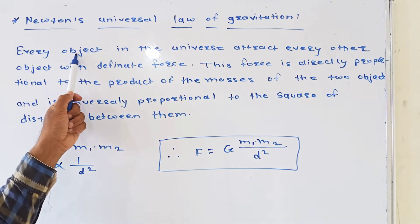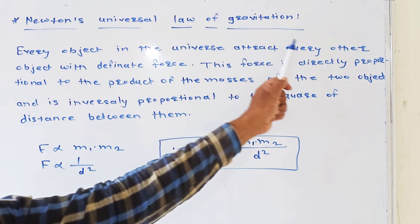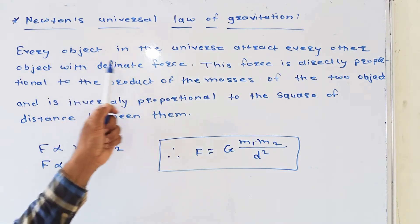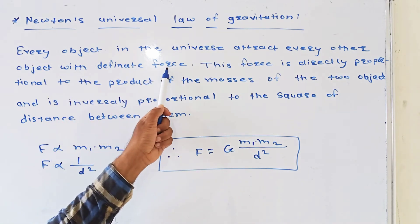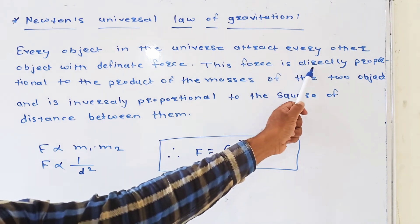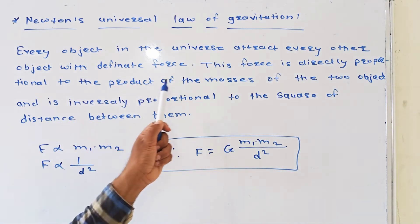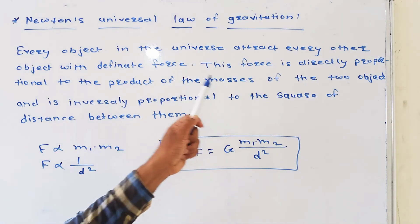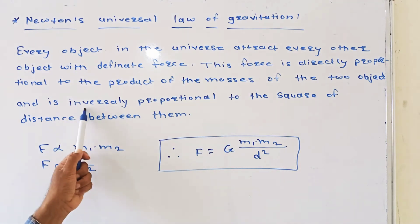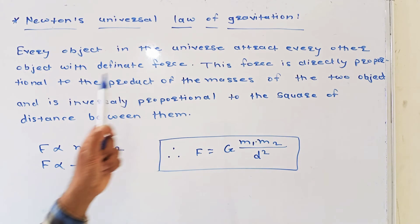So, every object in the universe attracts every other object with a definite force. The force is directly proportional to the product of their masses and is inversely proportional to the square of the distance between them.